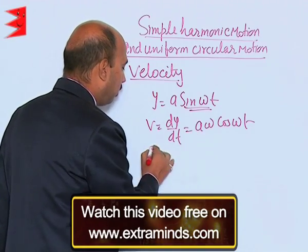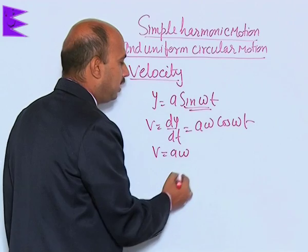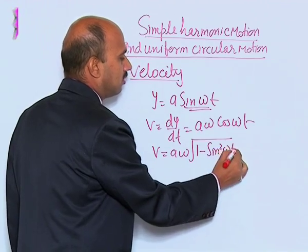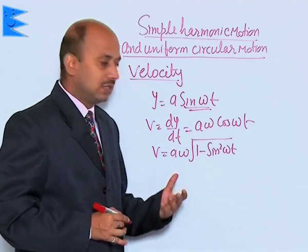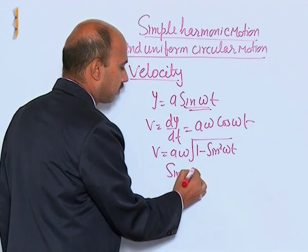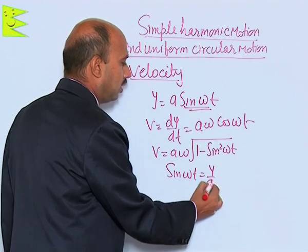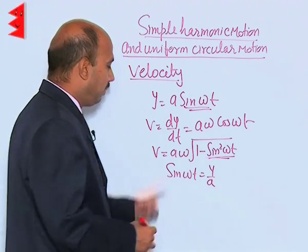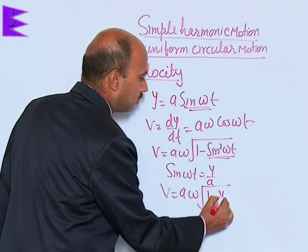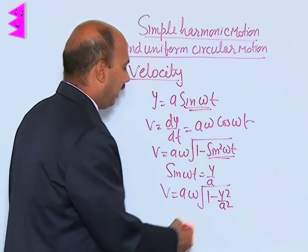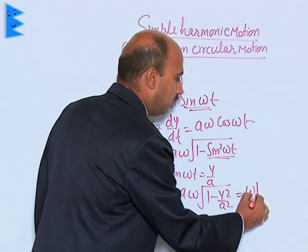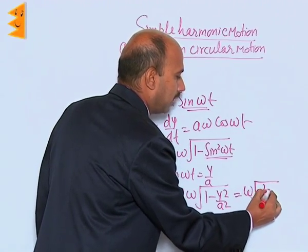We can write V is equal to a omega, and in place of cos omega t we can write the square root of 1 minus sin squared omega t. That uses the identity sin squared theta plus cos squared theta is equal to 1. We know that sin omega t is equal to y upon a, so substituting and simplifying, we get V is equal to omega under root of a squared minus y squared.